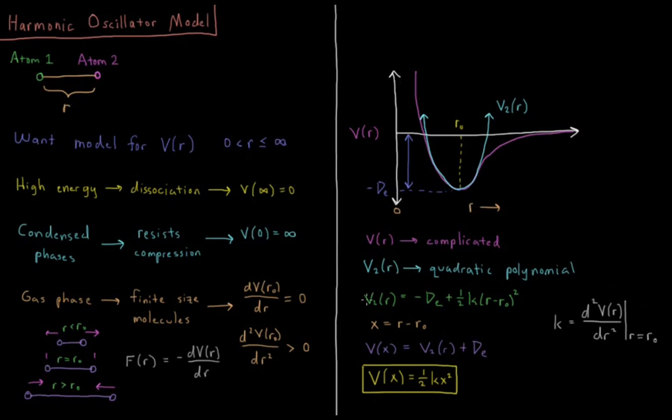So V2(r) is minus DE plus 1/2 K times (r minus r0) squared, where K is the value of the second derivative with respect to r of V(r) evaluated at r equals r0. It's the curvature of this parabola, where the minimum point of the parabola is minus DE, r0.